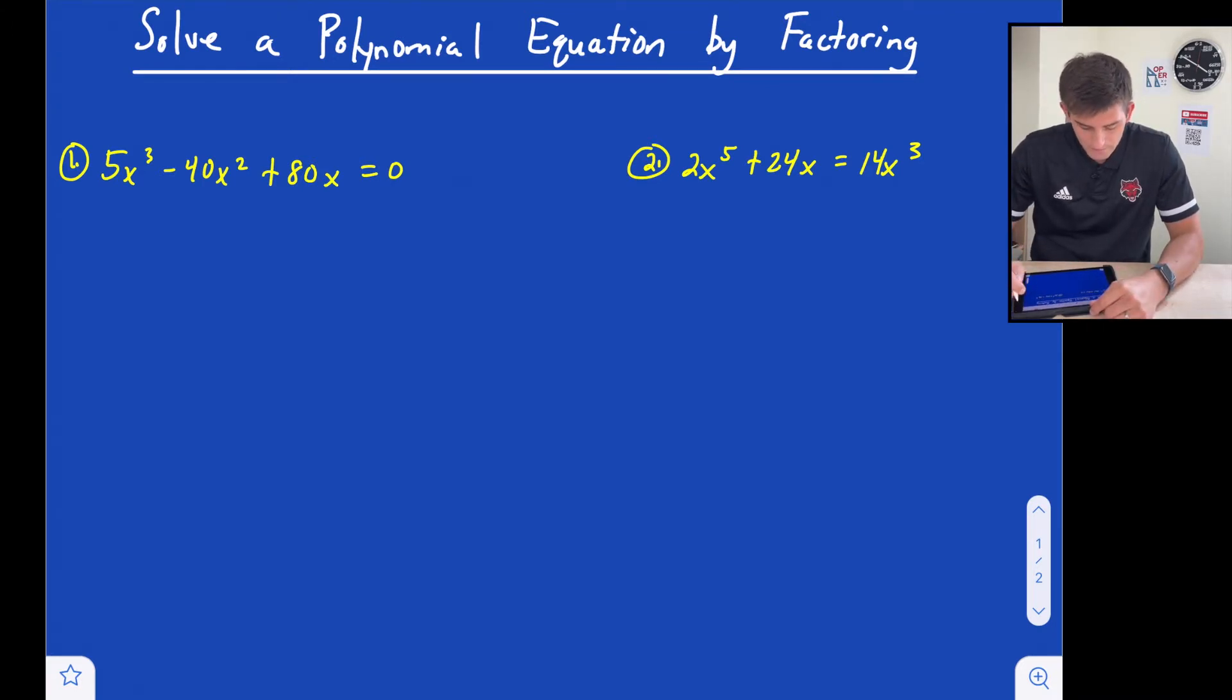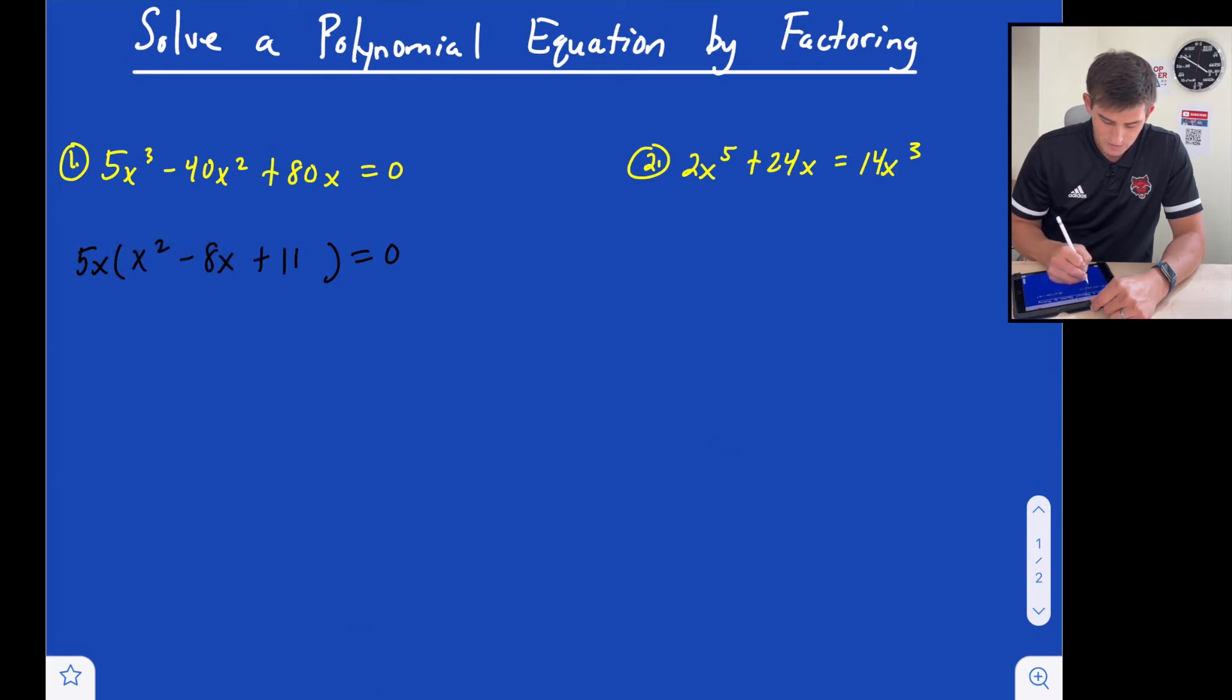So for number one, let's factor out a 5x. So we can factor out a 5x and that's going to leave us with an x squared minus 8x plus 16.